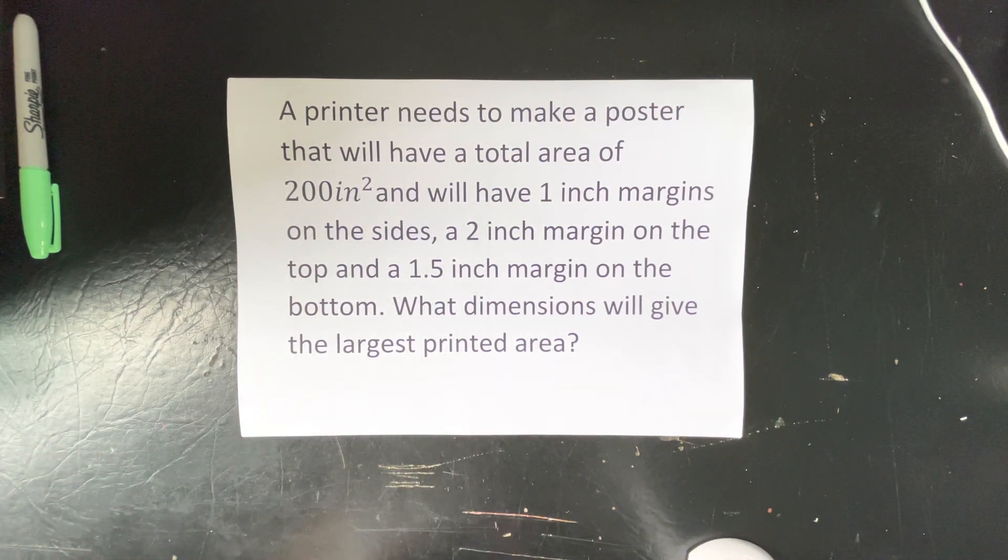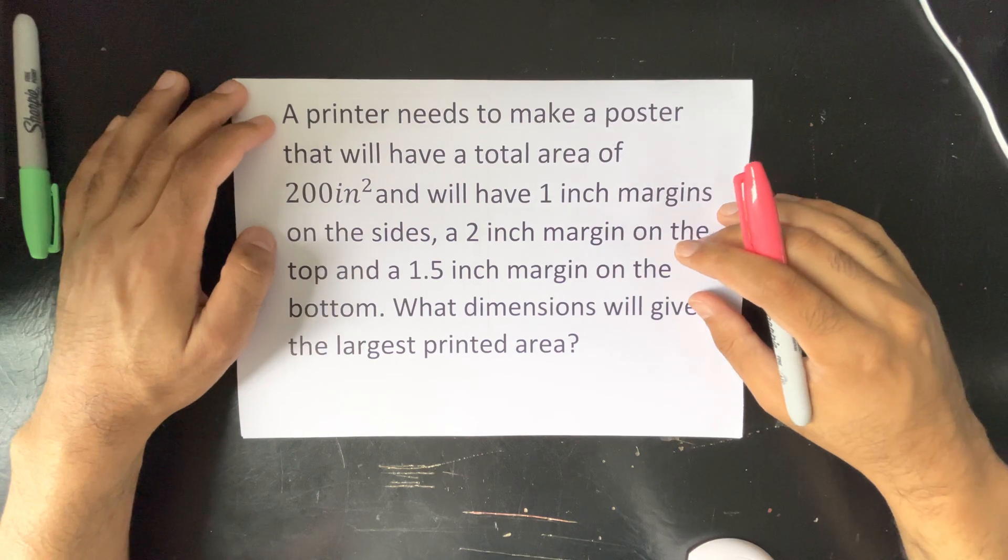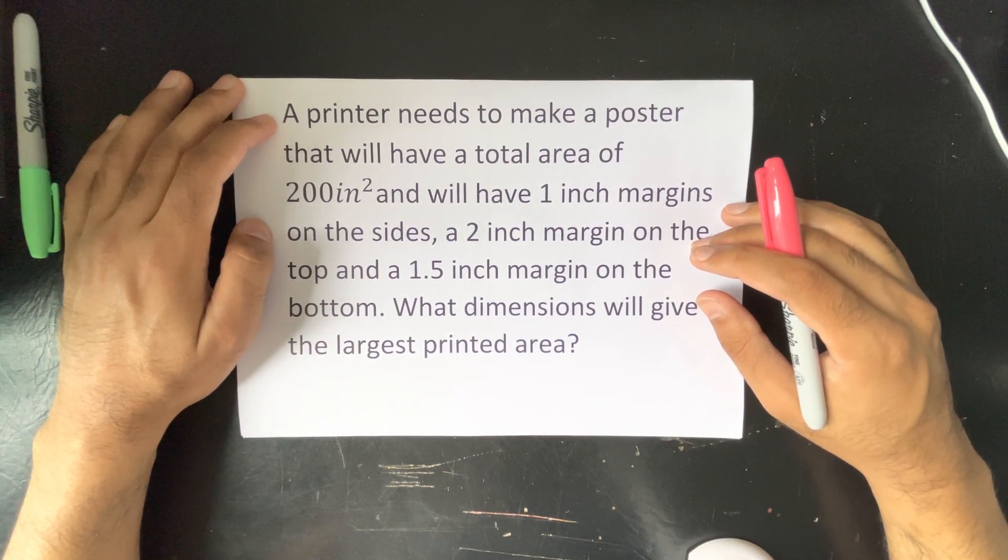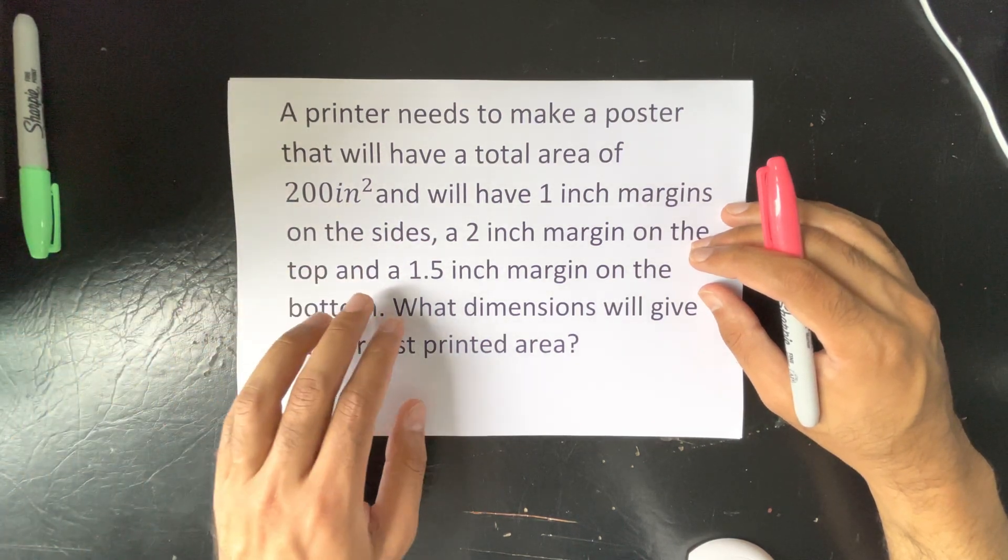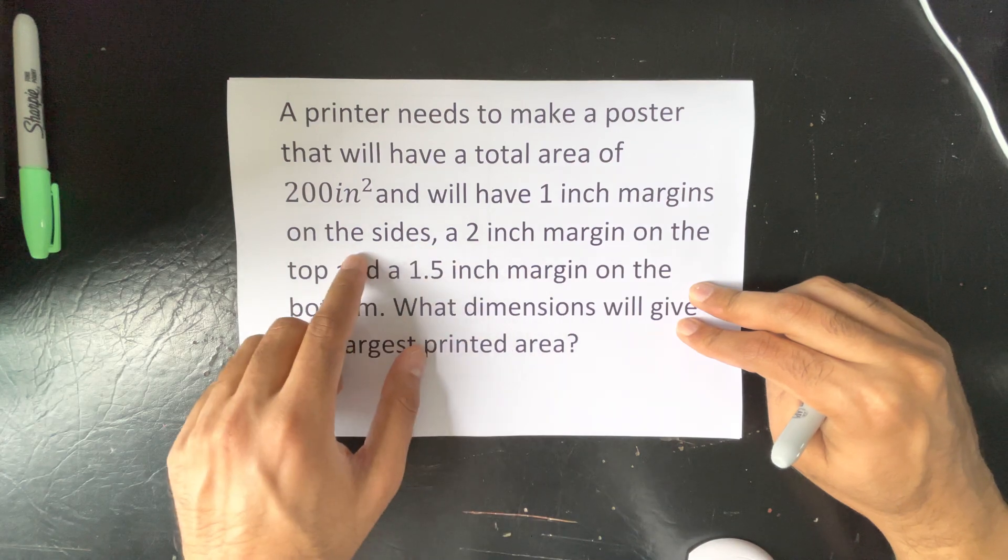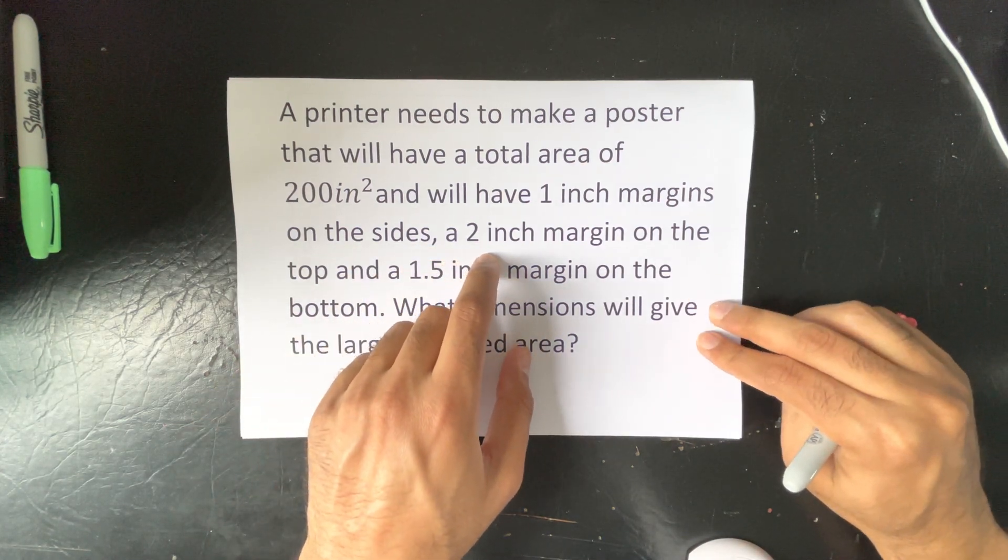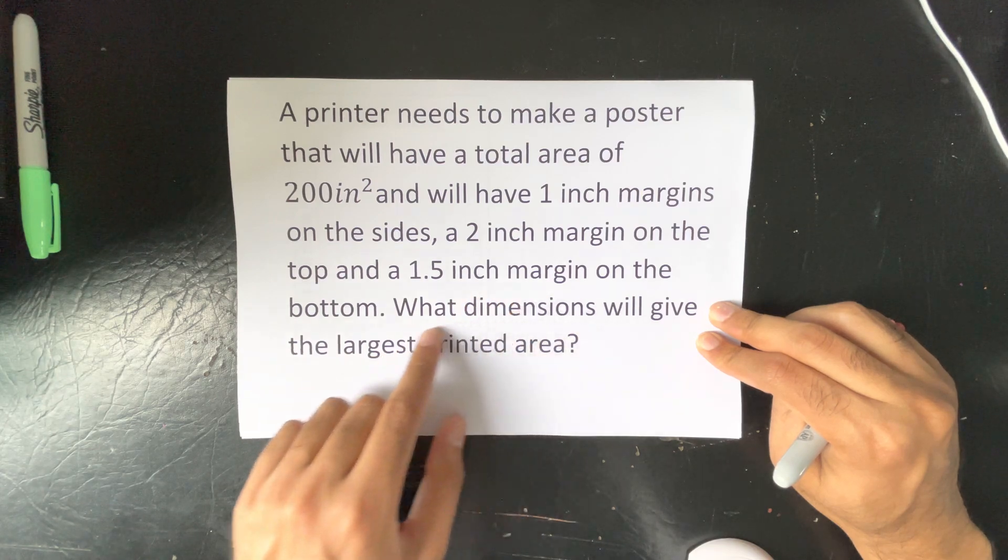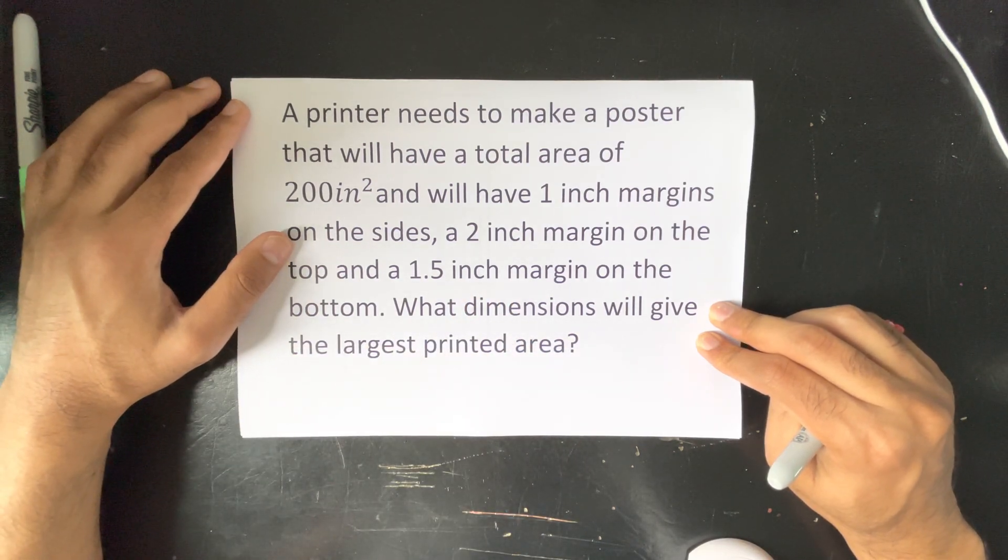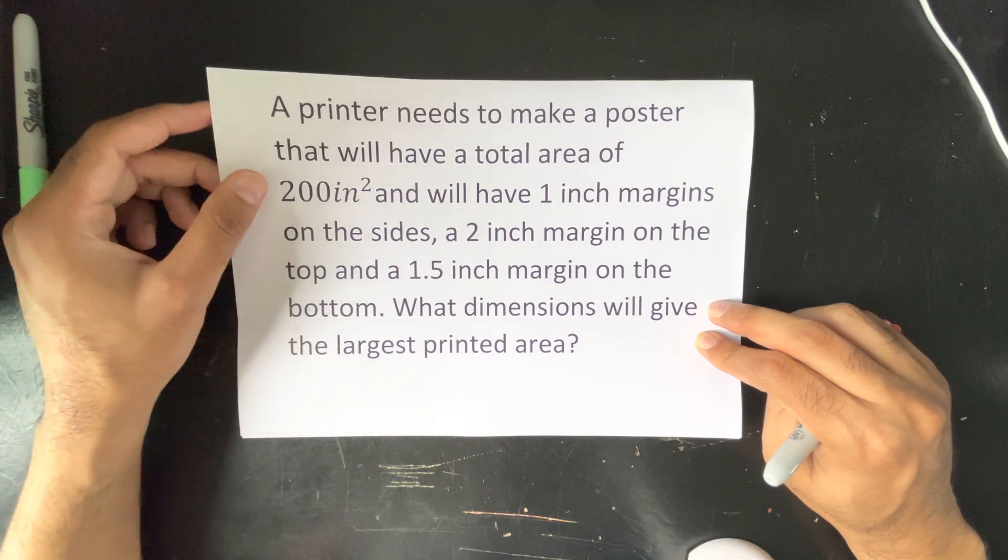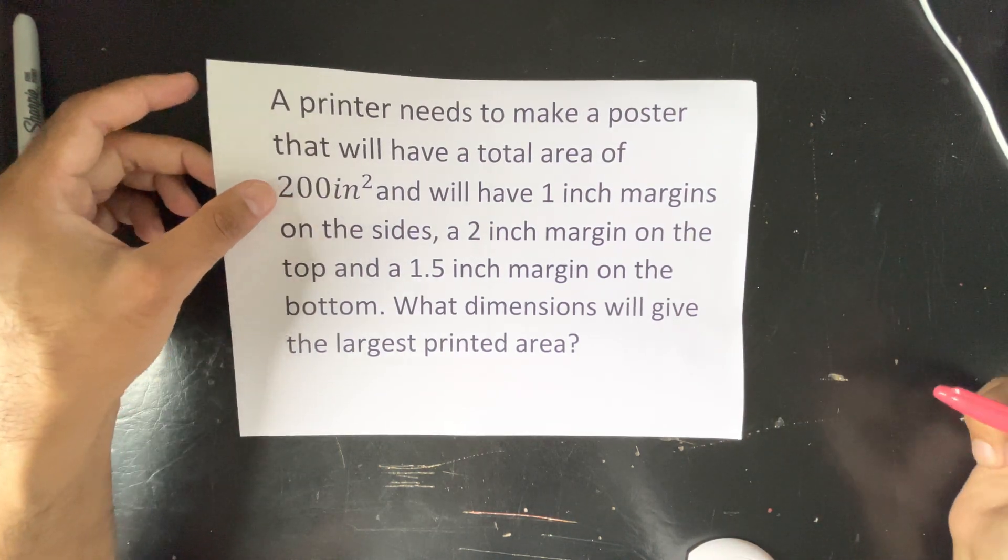Okay, we have another optimization question and it reads: A printer needs to make a poster that will have a total area of 200 inch squared and will have one inch margins on the sides, a two inch margin on the top and 1.5 inch margin on the bottom. What dimensions will give the largest printed area?